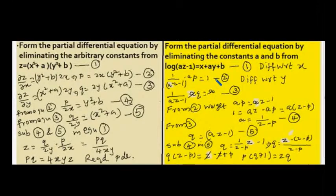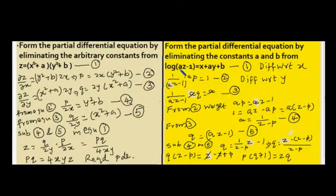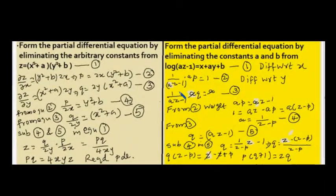Now let us differentiate the given equation with respect to y. Similarly, log of (az minus 1) is taken as a log x model, so the differentiation is 1 by (az minus 1), and differentiating the content inside the bracket: a is a constant, and the differentiation of z with respect to y is q. On the right hand side, the differentiation of x is 0, the differentiation of ay gives a (since a is constant and differentiation of y is 1), and the differentiation of b is 0. This is equation number three.